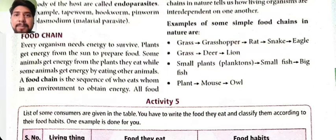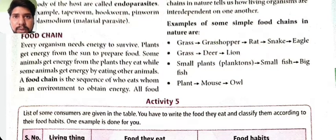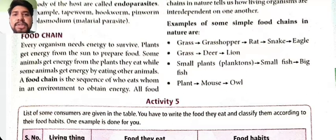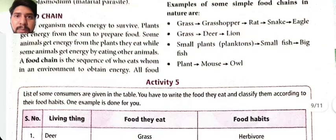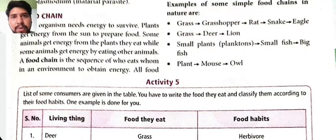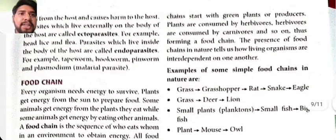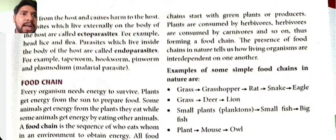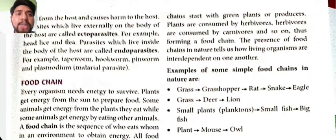Every organism needs energy to survive. Plants get energy from the sun to prepare food by the process of photosynthesis. Some animals get energy from plants they eat, while some animals get energy by eating other animals. A food chain is a sequence of who eats whom in an environment to obtain energy. All food chains start with green plants (producers). Plants are consumed by herbivores, herbivores are consumed by carnivores, and so on. An example food chain: grass → grasshopper → rat → snake → eagle.